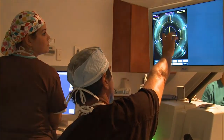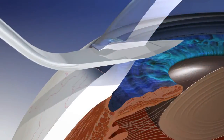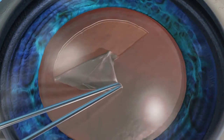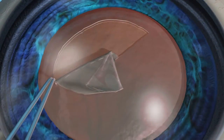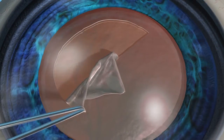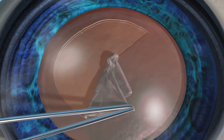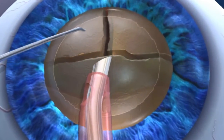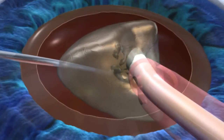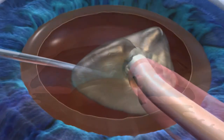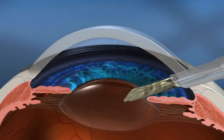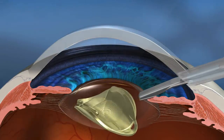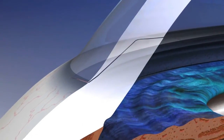Cataract surgery involves corneal incisions, capsular excision — a circular hole in the capsular bag — lens fragmentation, phacoemulsification, intraocular lens insertion, and incision closure.